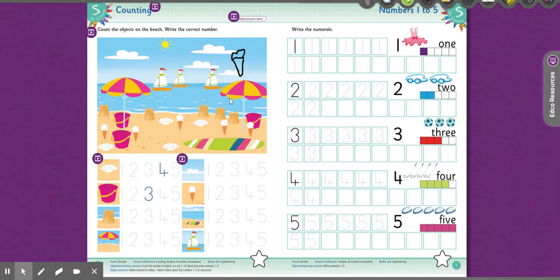Now, what I'm going to do is I'm going to count these ice creams. I've got one, two, three, four, five. Okay, so beside the ice cream, I will do the number five.